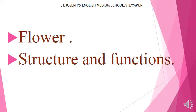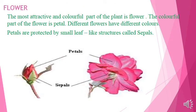Today we are going to discuss about flowers — the most colorful and attractive part of the plant — including the structure and functions of the flower. The colorful part of the flower is called the petal. You can see here a variety of flowers have different colors on them. These colorful parts are called petals.